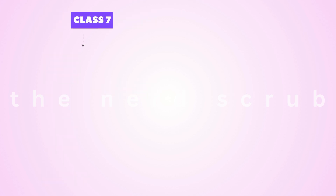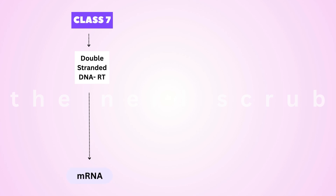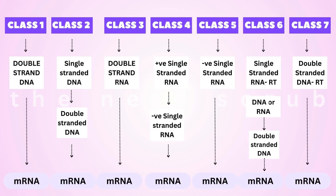Class 7 viruses have double-stranded DNA genomes that replicate through an RNA intermediate. This RNA is reverse transcribed back into DNA by reverse transcriptase. The example here is hepatitis B virus, which can cause liver infections.